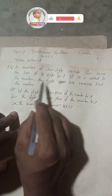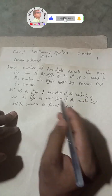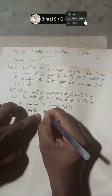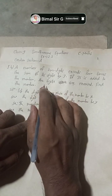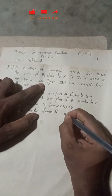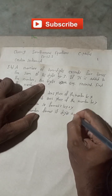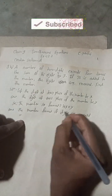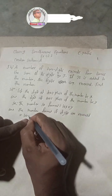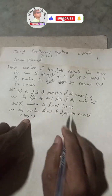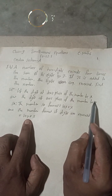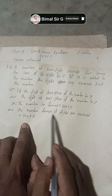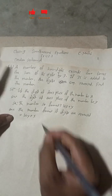Now for the reverse number condition: if the digits are reversed, x and y are interchanged. So in place of x we put y, and in place of y we put x. Therefore, the number formed when the digits are reversed is 10y + x.